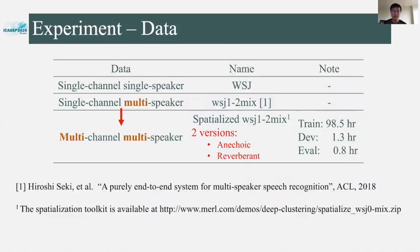Now let's talk about the experiments. The fundamental data we used is the Wall Street Journal dataset, which is a single-channel, single-speaker corpus. An artificially generated two-speaker mixture version was presented by randomly selecting two different utterances from the Wall Street Journal corpus and mixing them together, called WSJ1-2Mix. It is a single-channel, multi-speaker corpus. Using the spatialization toolkit available online, we simulated the multi-channel version of the WSJ1-2Mix data.